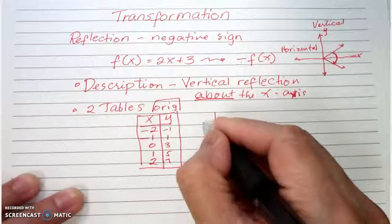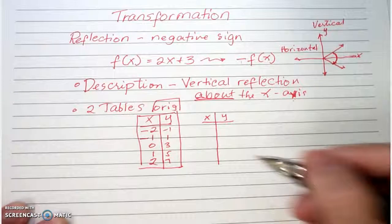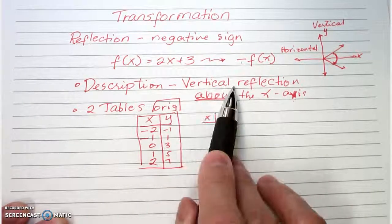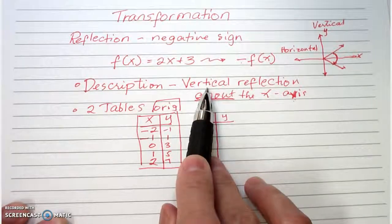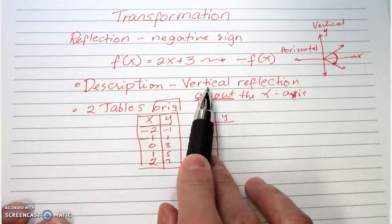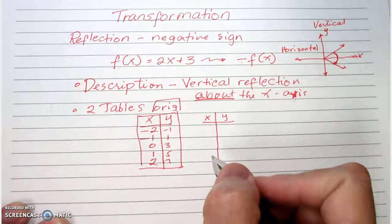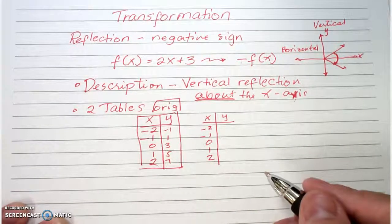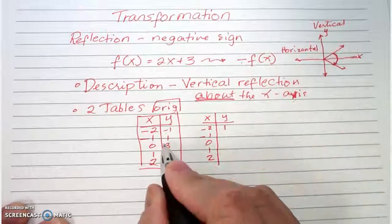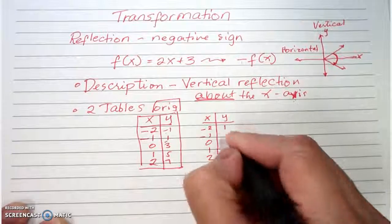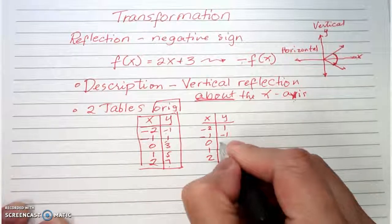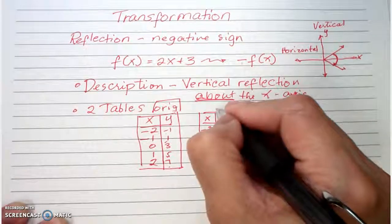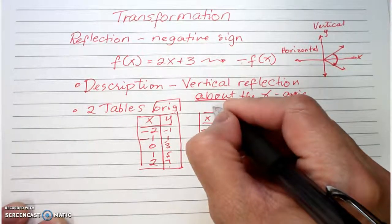Now you're going to create the new table. Since the description says vertical reflection, all y-values will be affected and the x-values stay the same. Copy down your x-values, but reflect all the y's: negative one becomes positive one, positive one becomes negative one, and all positive numbers become negative. This is your new table — the table of the transformed function.